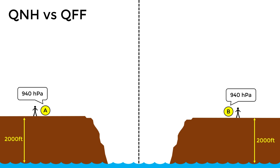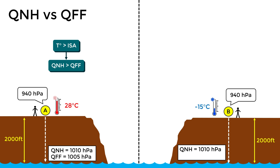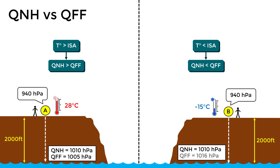Let's look at an example to understand it better. We have two stations under the same exact conditions. The only difference is that station A has a temperature of 28 degrees Celsius, and B is at minus 15 degrees. To calculate the QNH, we do not consider the real temperature — we simply assume standard conditions and reduce the pressure to sea level accordingly, obtaining 1,010 in both cases. On the other hand, to calculate the QFF, we must consider the current temperature at the station. Since these temperatures are so different, the resulting QFF will be different in both cases. For station A, since the temperature is above standard, the QFF will be higher than the QNH — in this case, 1,005. For station B, since the temperature is below standard, the QFF will also be higher than the QNH — specifically, 1,016.